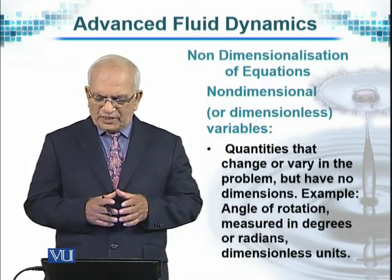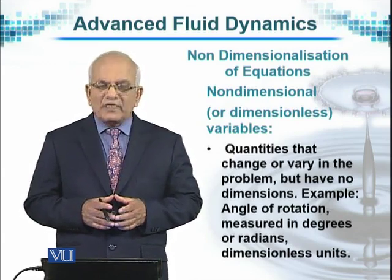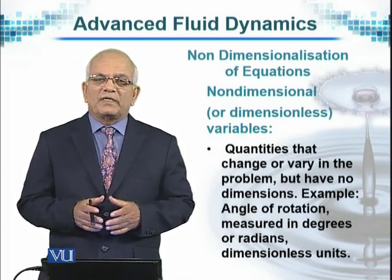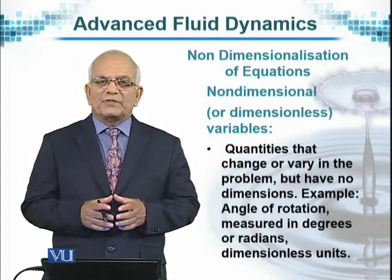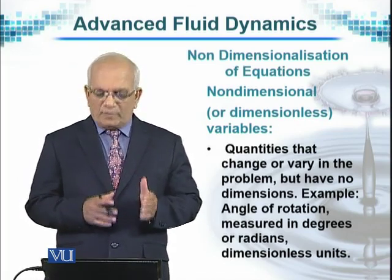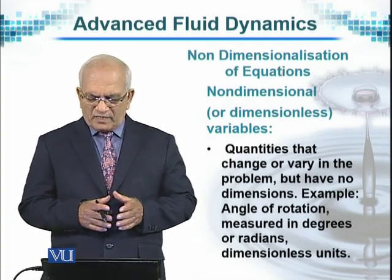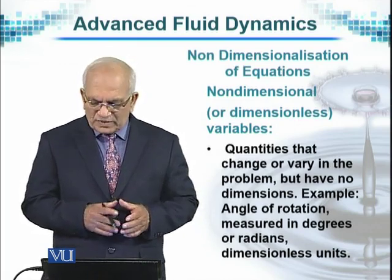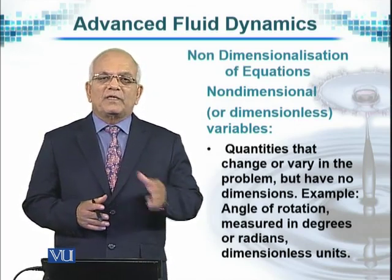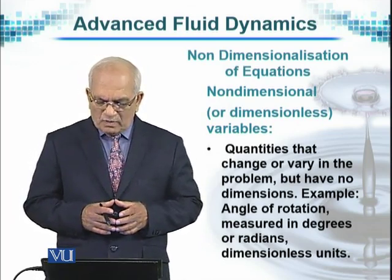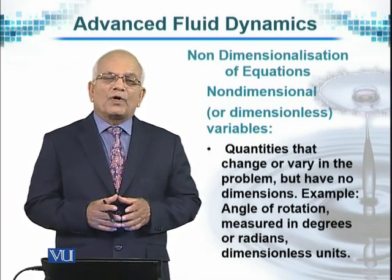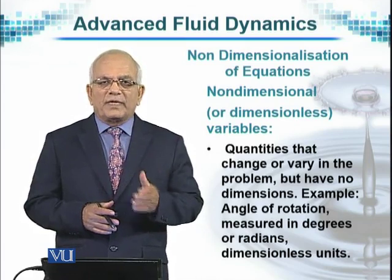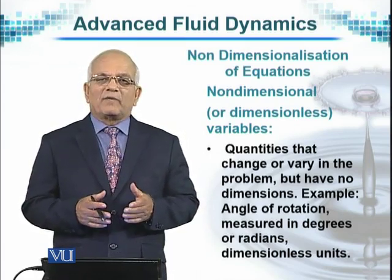Then there are quantities that change or vary in the problem, but they have no dimensions. With time and length, I mentioned a little earlier that they have dimensions. Similarly, there may be quantities that change or vary but have no dimensions. Their examples are the angle of rotation when there is angular motion, because theta is just a number. Even if we are measuring the angular motion in terms of radians, they are still dimensionless units.